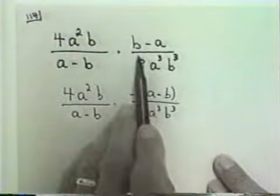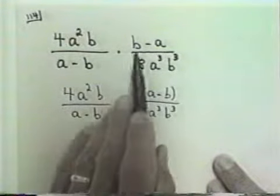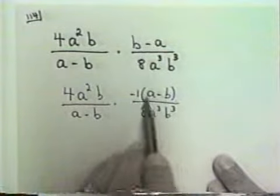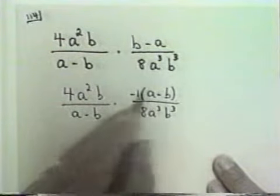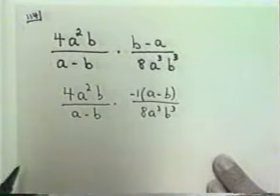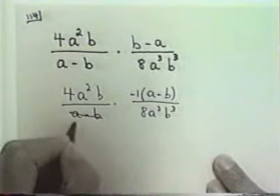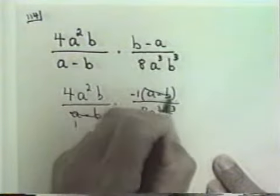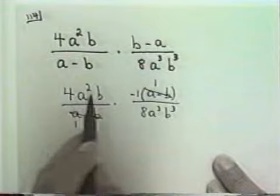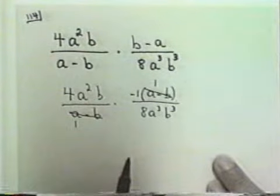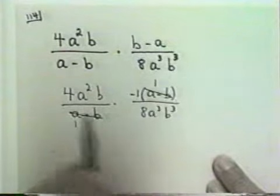To change the order of subtraction, I need to factor out a negative 1. Now I can divide both the numerator and denominator by a minus b — a minus b goes into a minus b one time, and a minus b goes into a minus b one time. These numbers are already factored, so I can reduce as usual.